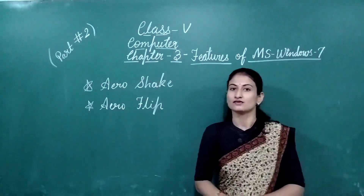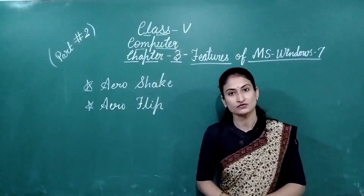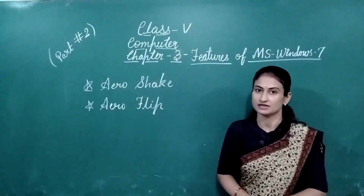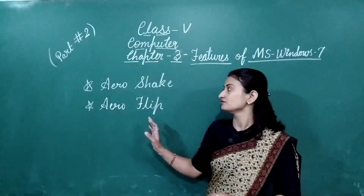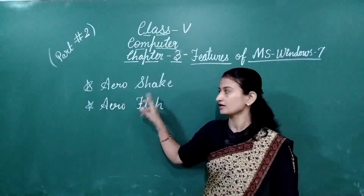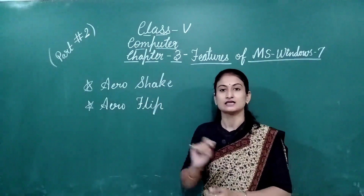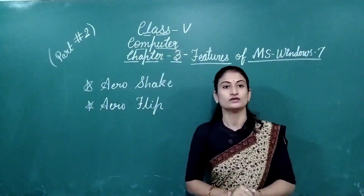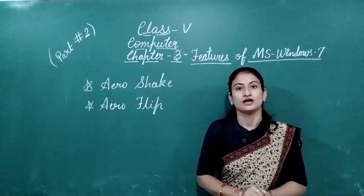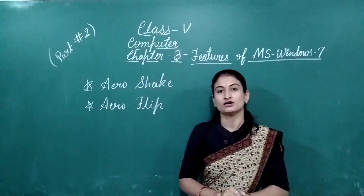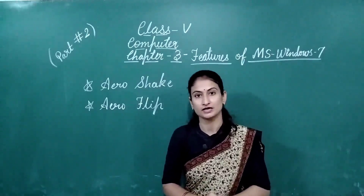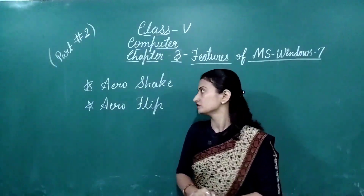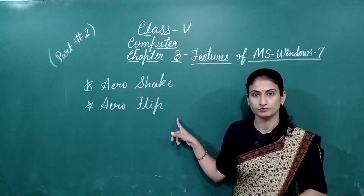So, kids, in our last class we discussed half of chapter number 3. Now in today's class, we discussed the second half. In this class, we discussed Arrow Shake and Arrow Flip. Last class, we discussed Arrow Snap and Arrow Pick — those are the other features. Arrow Shake and Arrow Flip are today's topics.